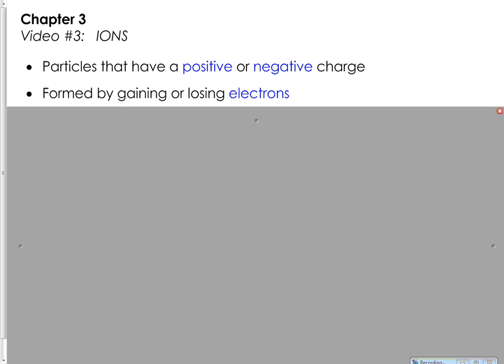This part is hard for some students to remember, so it's important that you write this down. If you remember that electrons are negative, and you gain more negatives, you will now have a negative charge. So negative ions are formed by gaining electrons and positive ions are formed by losing them. What you're gaining and losing are negatively charged particles — gain more negatives and you become negative; lose some negatives and you become positive.